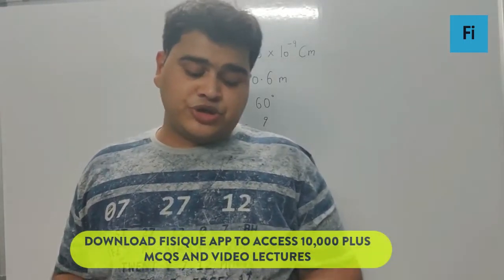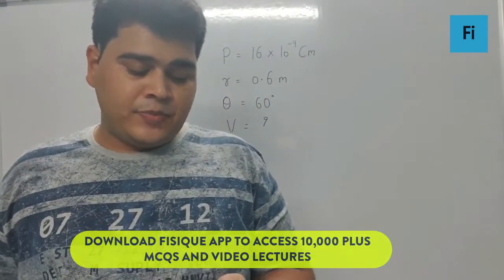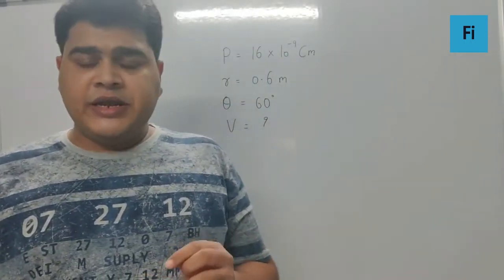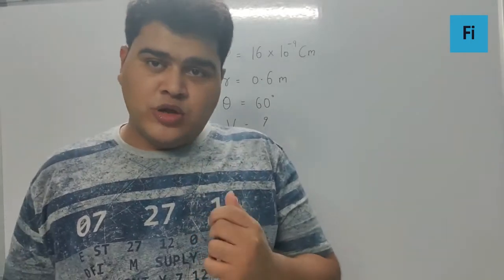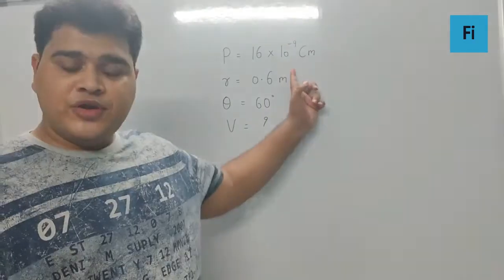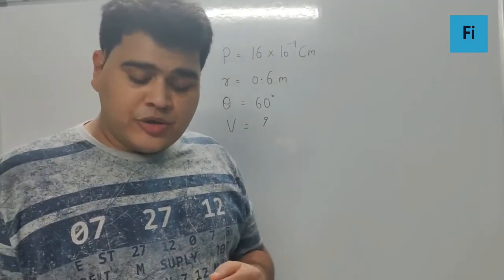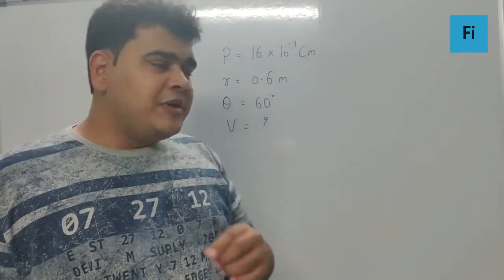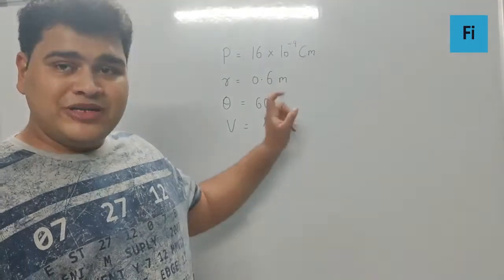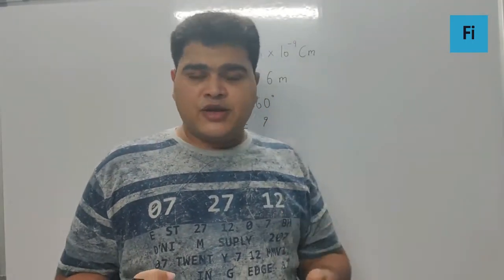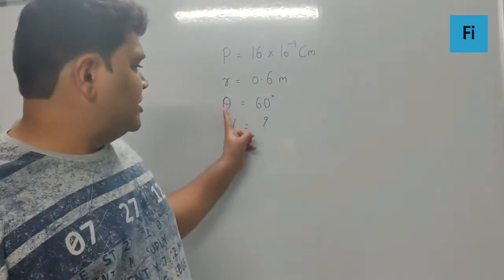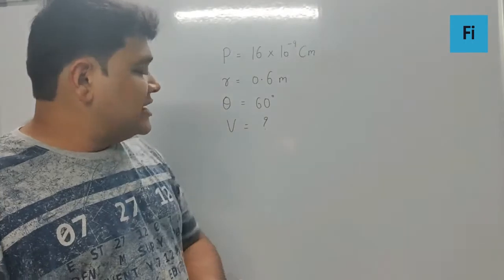So guys, the next question is: a short electric dipole has a dipole moment of 16 × 10^-9 coulomb-meter, which I've already written here. The electric potential due to the dipole at a point at a distance of 0.6 meter from the center of the dipole, situated on a line making an angle of 60 degrees with the dipole axis.